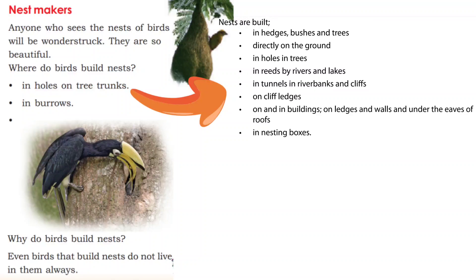Some birds nest in cool water areas. Some nest on cliffs, ledges, and walls, and under the eaves of roofs — on buildings. Some birds also use nesting boxes, which are artificial items placed for birds to nest in.